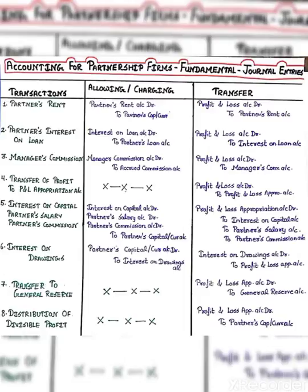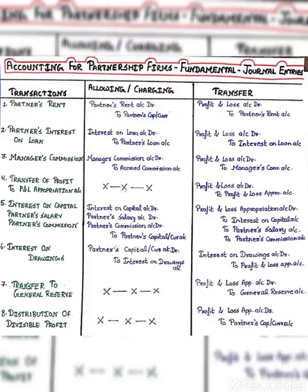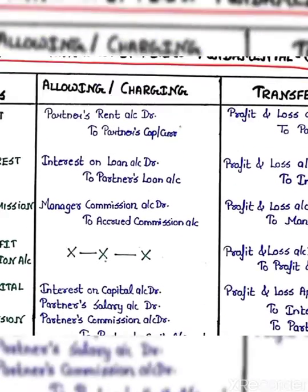Partner capital account and P&L account. That means here entry will be... sorry, partners rent account debit to partners capital account. What entry will be? Partners rent account debit to partners capital account.